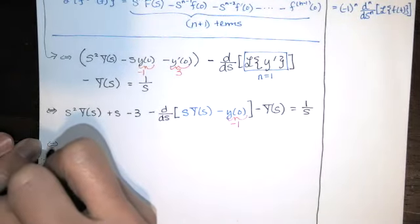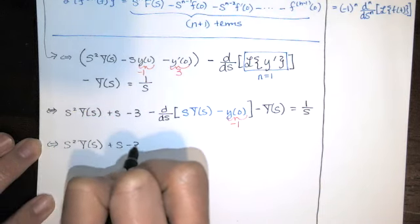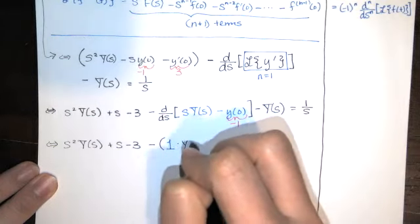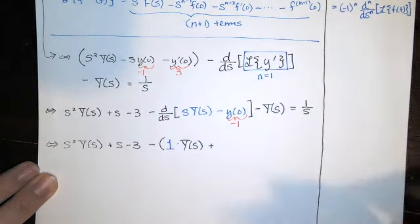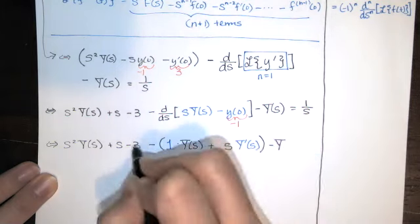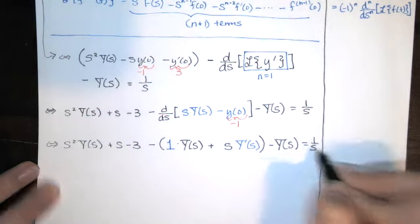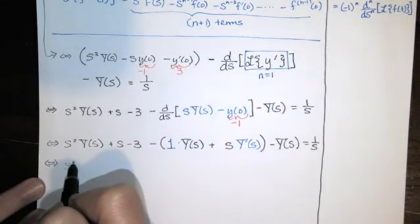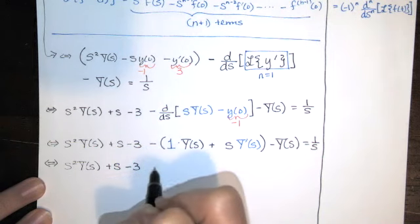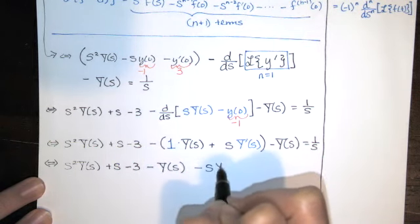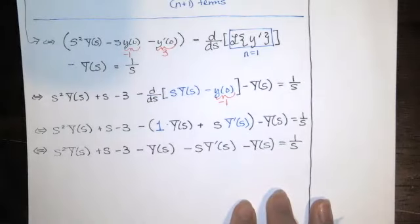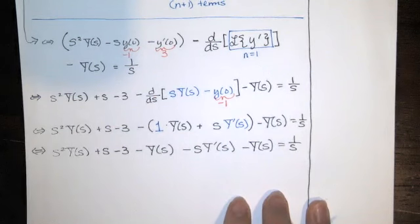Since we're taking the derivative of a product, we use the product rule. Distributing the negative one gives us S squared times Y(S) plus S minus three, minus Y(S), minus S times Y'(S), minus another Y(S), all equal to 1/S. This is a first order differential equation in Y(S).